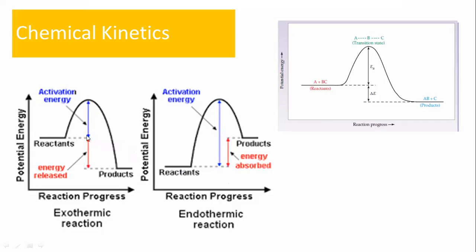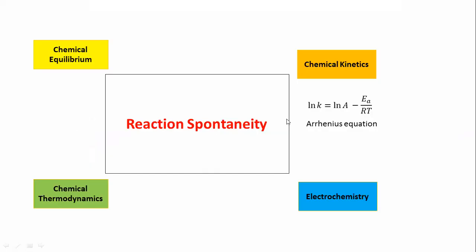With low activation energy, it is easier for the reaction to move in the forward direction. You can explain reaction spontaneity in two ways: one is the rate constant, another is the activation energy. More will be the value of k, faster will be the reaction; smaller will be the activation energy, more spontaneous will be the reaction. We concluded that if the sign of delta H is positive, it is endothermic and non-spontaneous; if minus, it is exothermic and spontaneous.